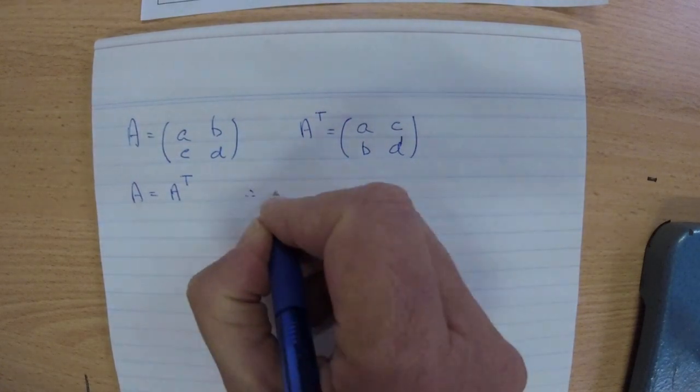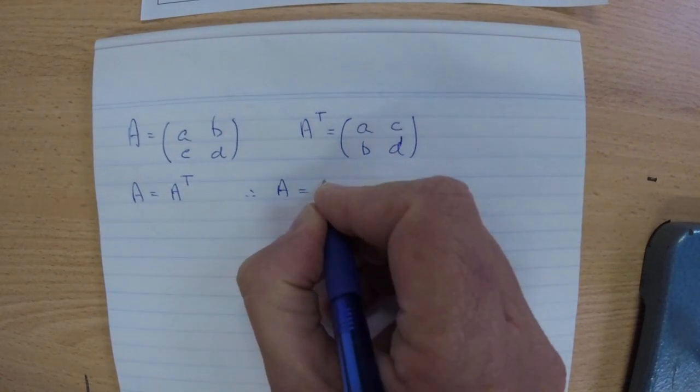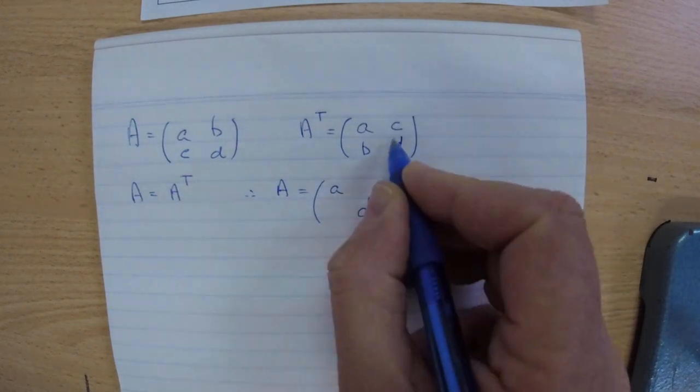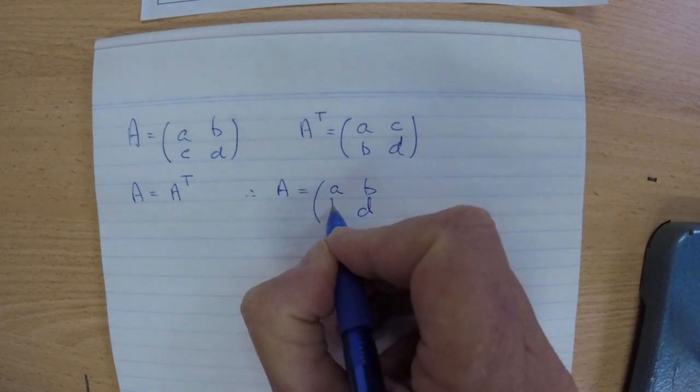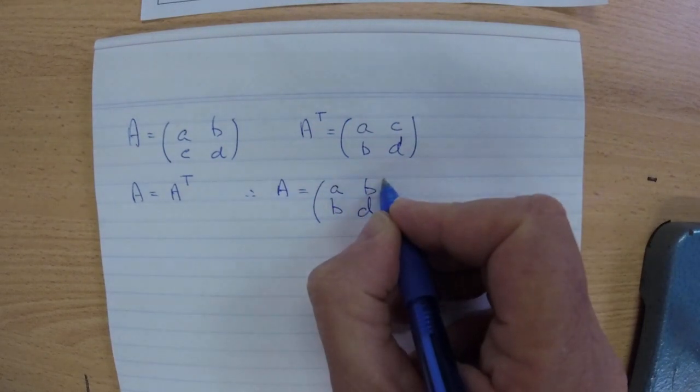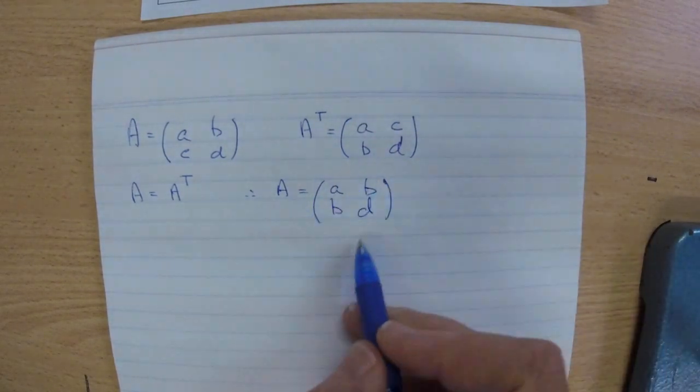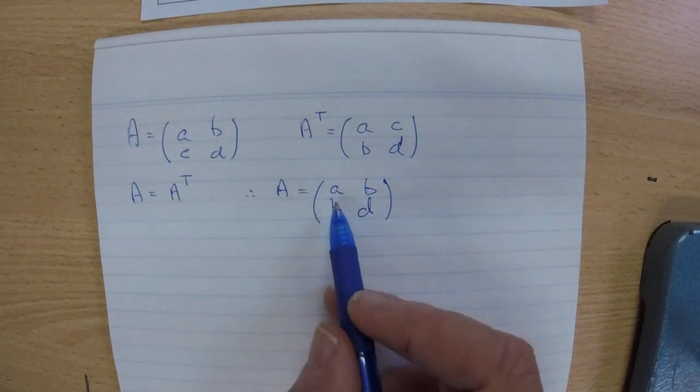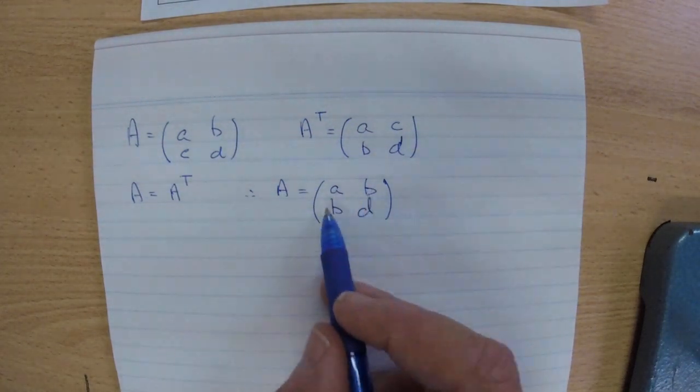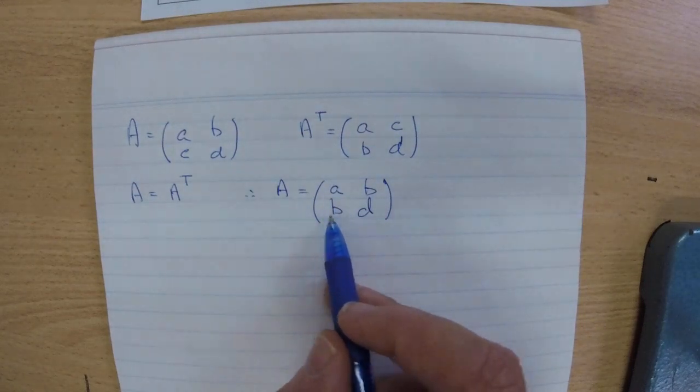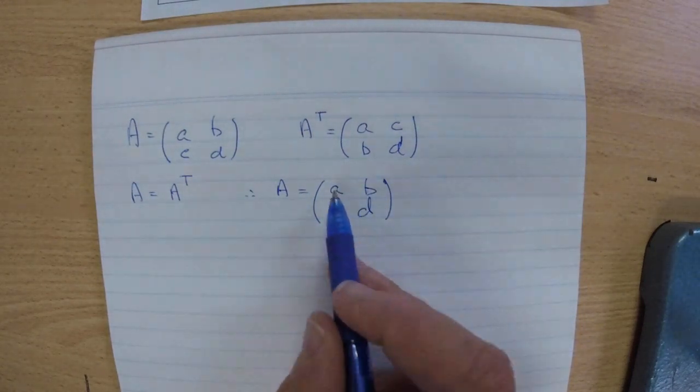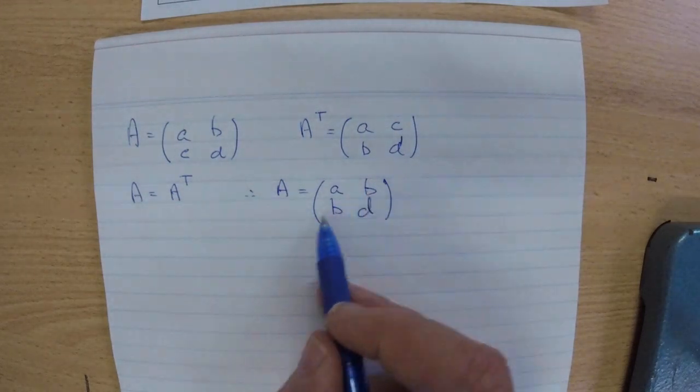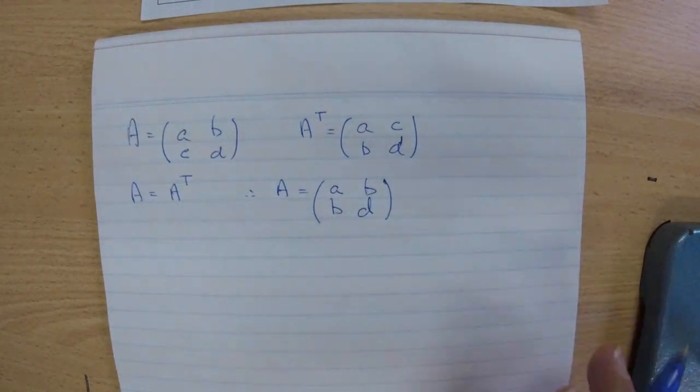Therefore, if we have a matrix of the form A, B, B, D, and then both of these have the same value, this is a symmetric matrix, a 2x2 symmetric matrix, because as we do a transpose we'd end up with A, B, B, D. So A and D can be different. B has to equal this element here on the opposite diagonal.